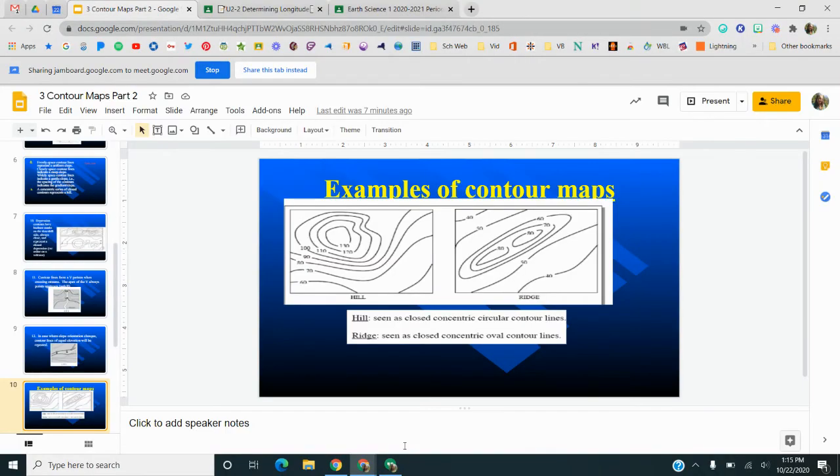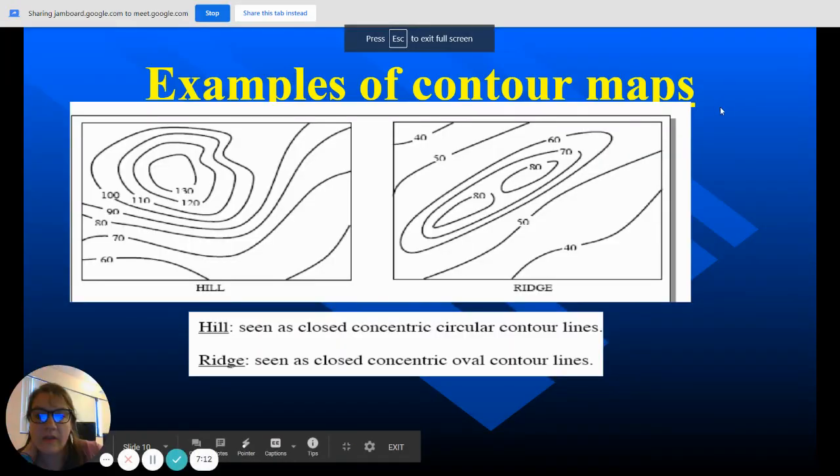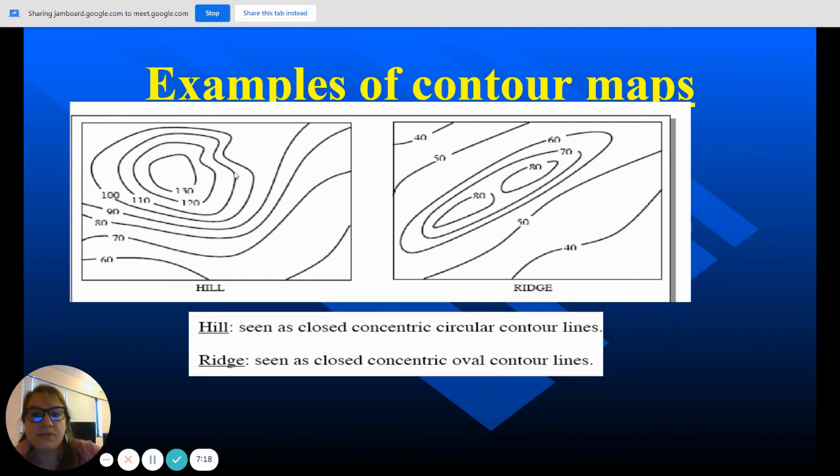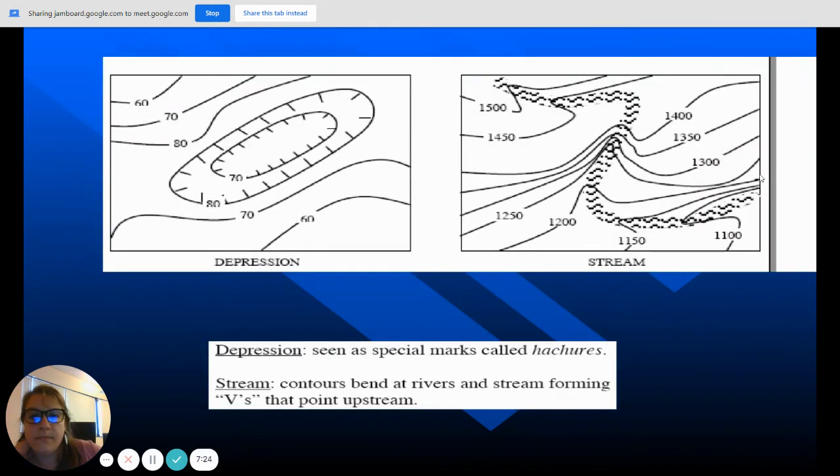These are examples of contour maps. You can see here that you have these circles. Those are going to be your hills. A ridge usually are elongated circles. Here's what a depression looks like on the map. You have the hachure marks, which shows that it's going back down. And then you have here the Vs. Those are pointing upstream. So really, this water is going in this direction.